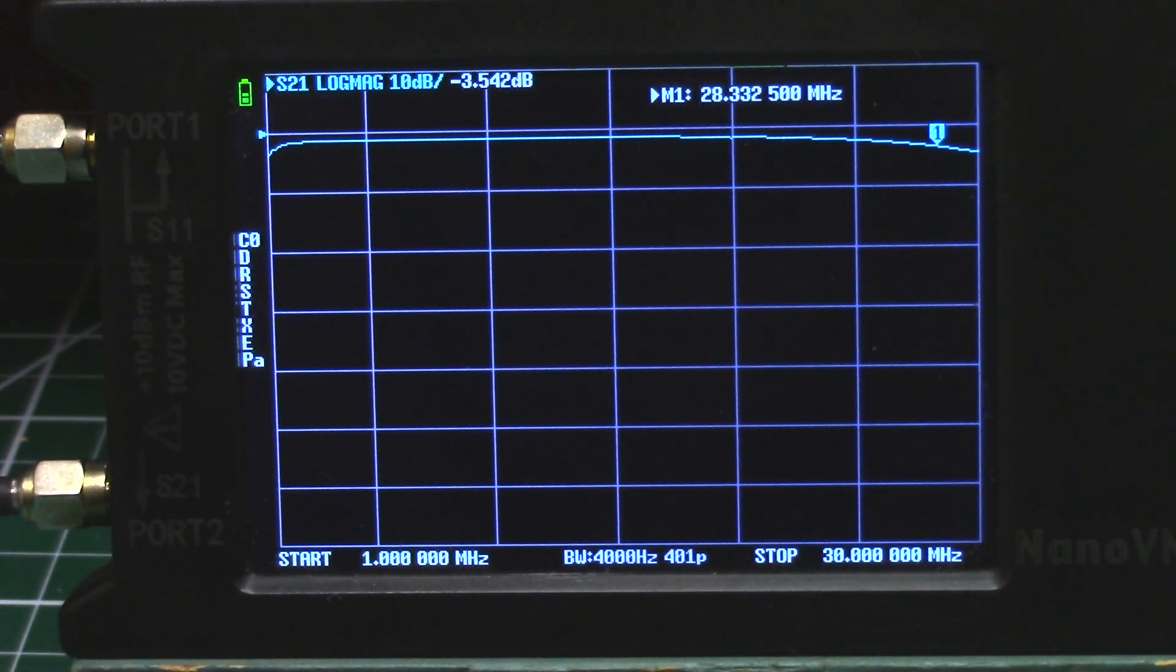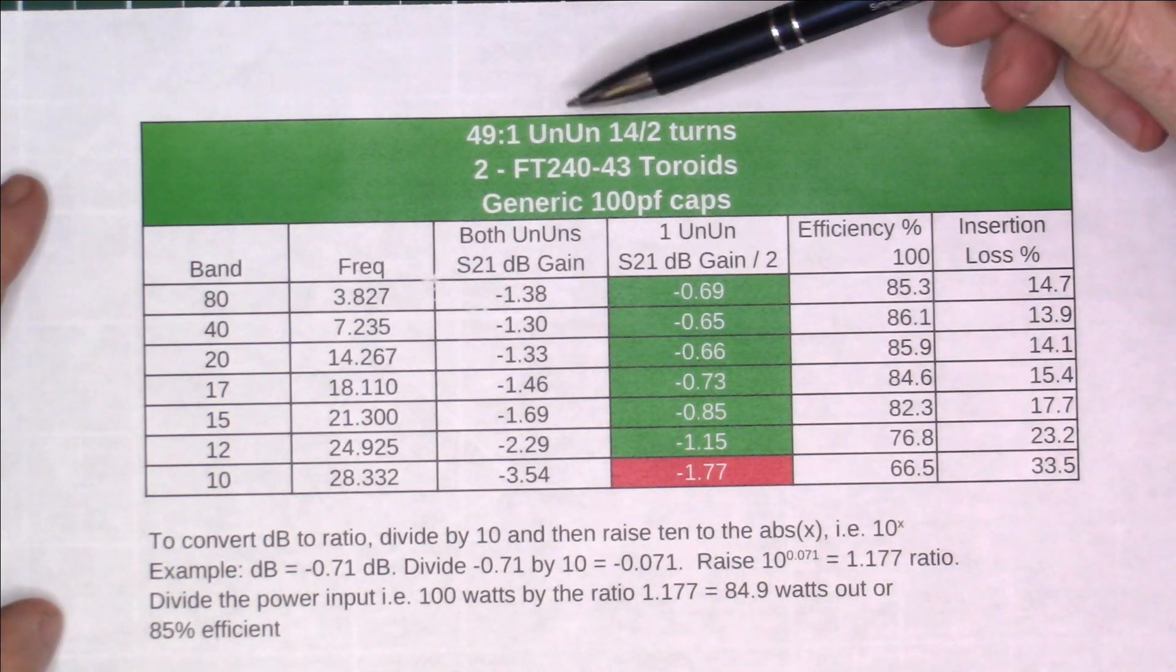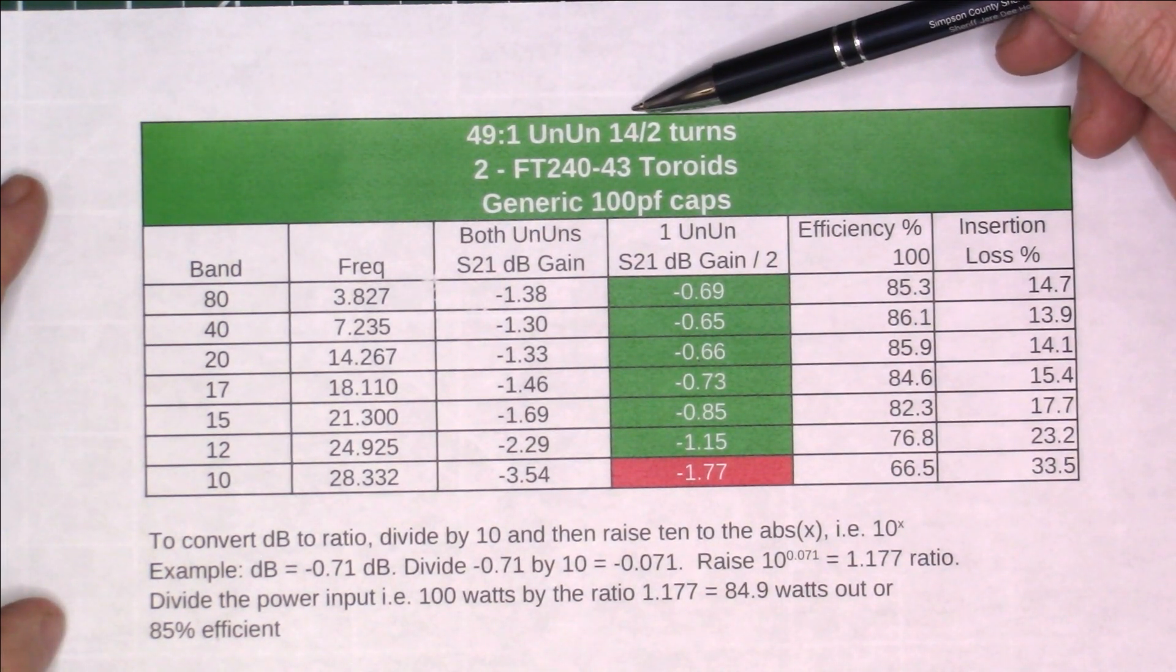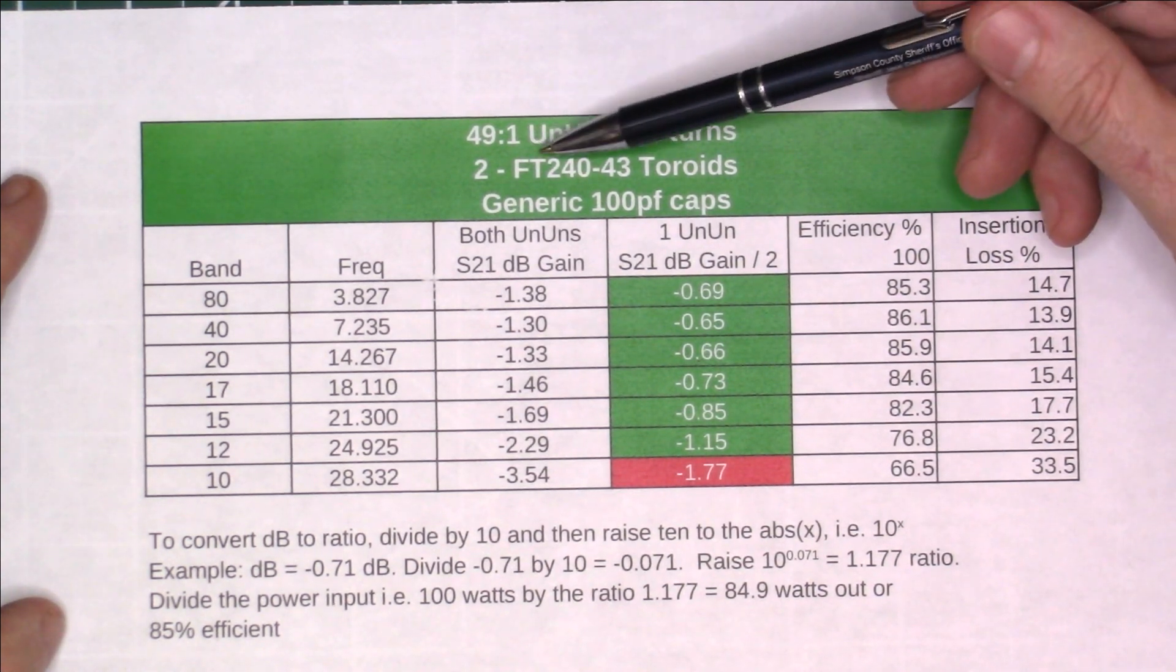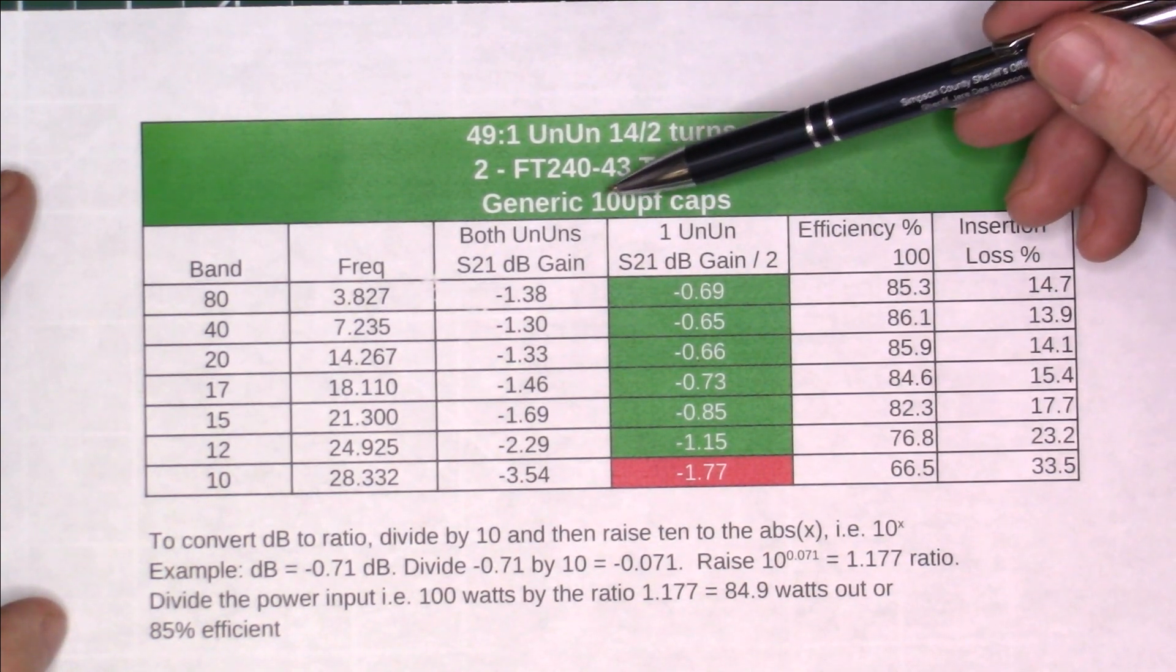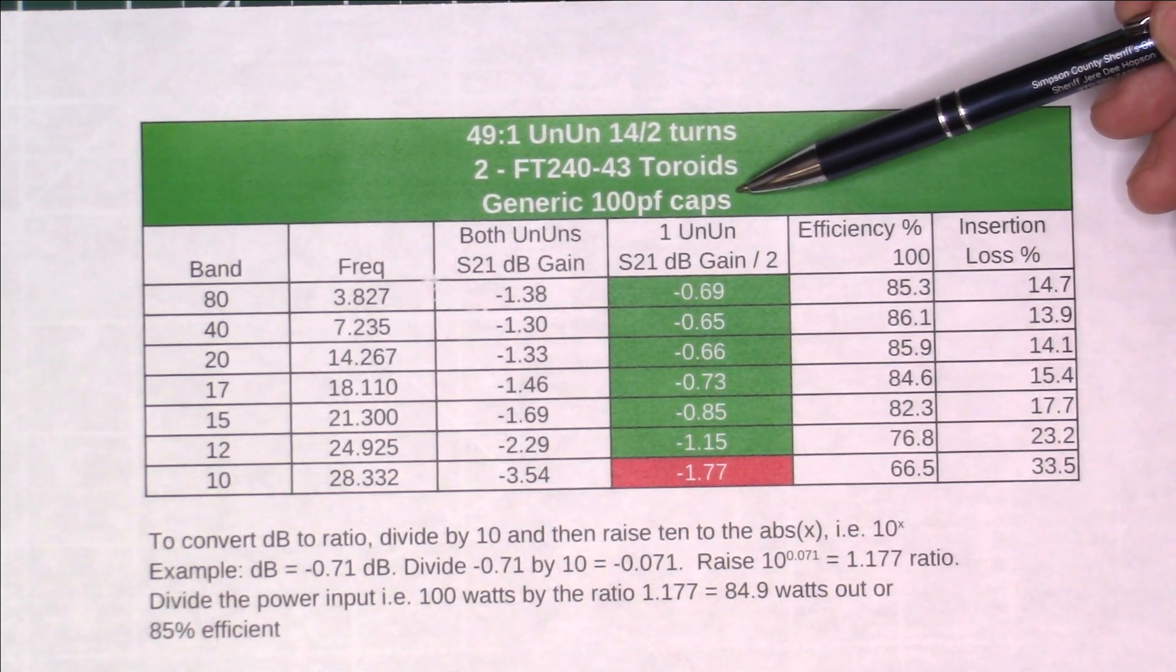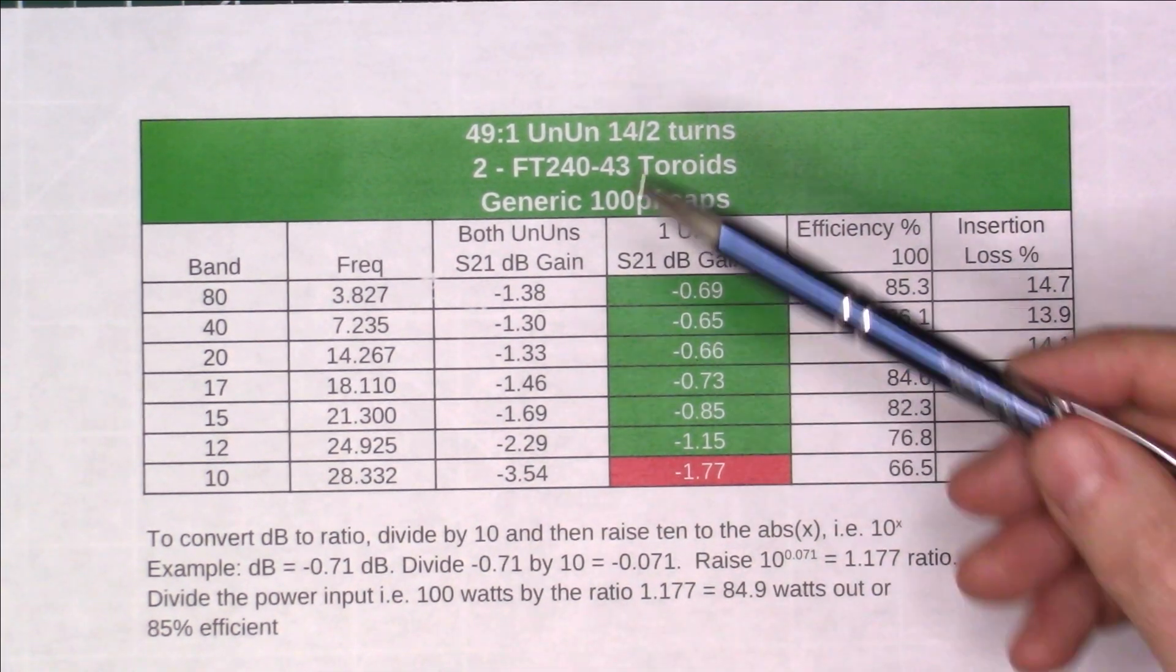Here's our test results. This is for a 49 to 1 un-un, 14 secondary turns, 2 primary turns. It's wound on two FT-240-43 toroids in a stack, and it uses a generic 100 picofarad capacitor across the center conductor to the shield.